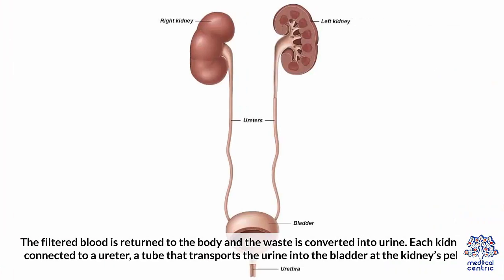The filtered blood is returned to the body and the waste is converted into urine. Each kidney is connected to a ureter, a tube that transports the urine into the bladder at the kidney's pelvis.